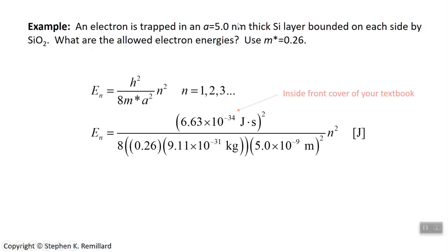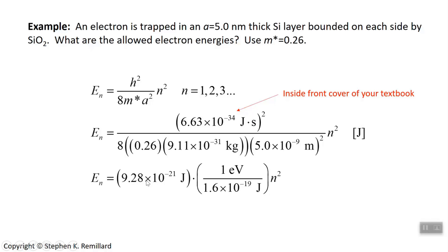m-star is 0.26 times 9.11 times 10⁻³¹ kilograms. We'll use Planck's constant from the front cover of the textbook. A was given as five nanometers — we must work in SI units, so length a is in meters, Planck's constant is in joule-seconds. You can convert to electron volts at the end. The result comes out to 9.28 times 10⁻²¹ joules, which you immediately convert to electron volts.